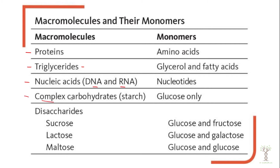We also consume carbohydrates. Complex carbohydrates are our starch and fiber. Simple carbohydrates are sugars: sucrose is composed of glucose and fructose — this is our table sugar; lactose is composed of glucose and galactose — found in milk or dairy products; and maltose is two glucose molecules, which comes from breaking down starches.